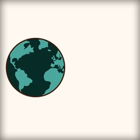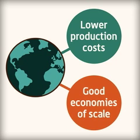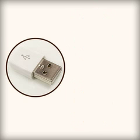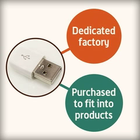The economies of scale that are created through trading on a global scale allow production costs to be lower. A product needs to be used all over the world to achieve good economies of scale. For example, an MP3 player has a standard USB socket to connect to computers. The USB connection will be made in a factory dedicated to making them and then purchased by different manufacturers to fit into their products.